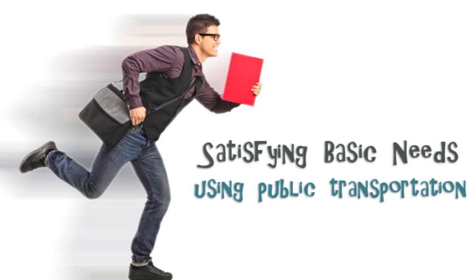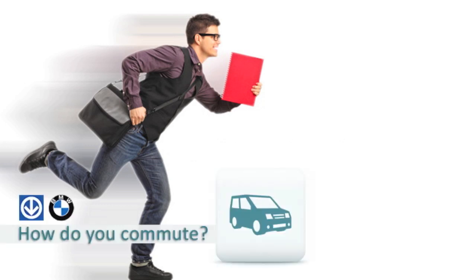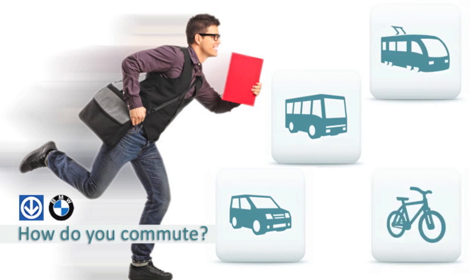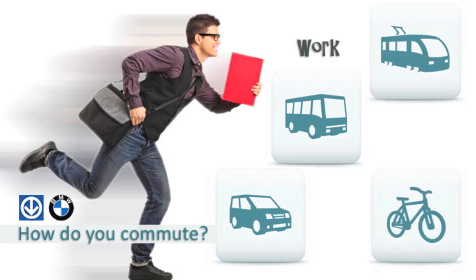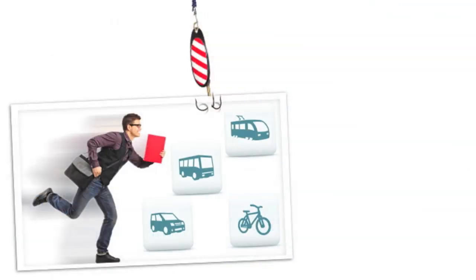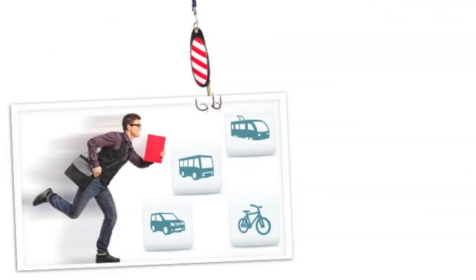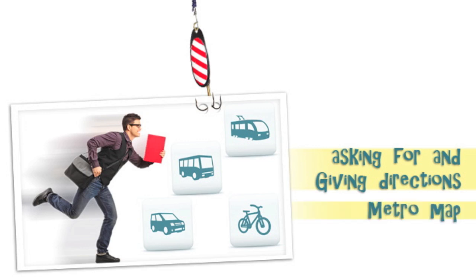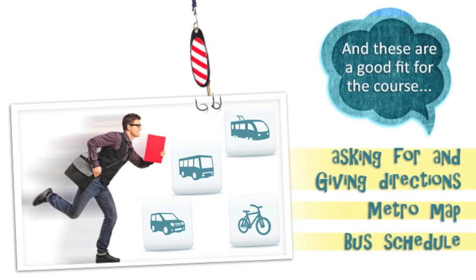Let's look at an example or two, shall we? In the course Satisfying Basic Needs, there is a real-life situation using public transportation. The two logos, combined with the questions — how do you commute, do you drive, take the bus, metro, or walk — serve as a trigger for discussing how one gets to work, school, and home. Notice how this hook is a springboard to various speaking and reading activities, such as asking for and giving directions, and finding specific information on a metro map or bus schedule.